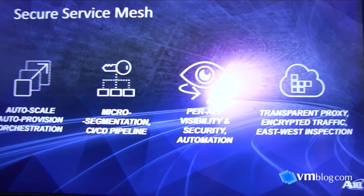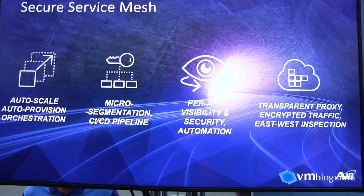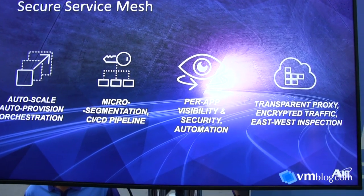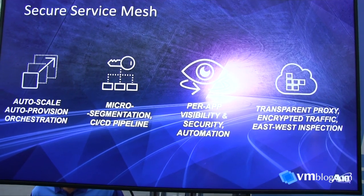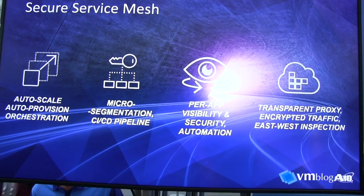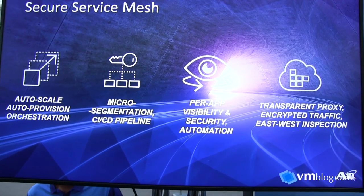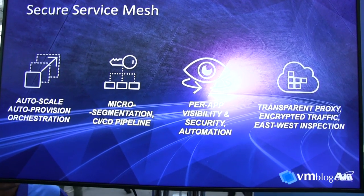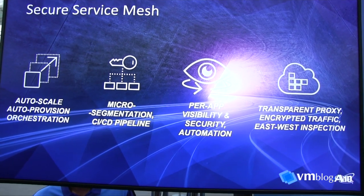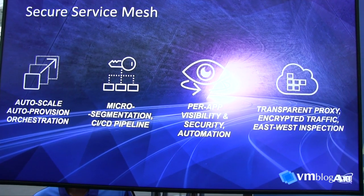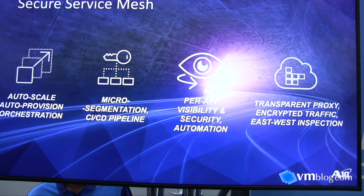The secure service mesh operates as a transparent proxy set up to inspect east-west traffic — traffic flowing between your pods within your Kubernetes infrastructure. It provides visibility so you can define and verify security policies, and it keeps up with your CI/CD pipeline as pods scale up and scale down without manual intervention. It encrypts traffic as it crosses node boundaries, so plain text stays within nodes and any traffic on the wire is encrypted. It's not just encrypted — it's also mutually authenticated, with client authentication, commonly referred to as MTLS.